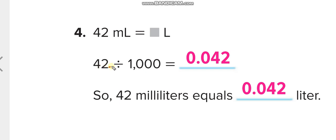Let me show that again in writing. The decimal for 42 starts at the end. Moving it once puts it here; I need three moves total because of three zeros. Moving again — digits are finished so I place a zero and move again. The decimal reaches the final position: 0.042. I hope you understand.